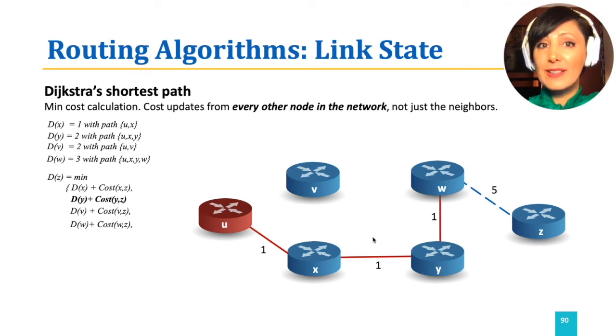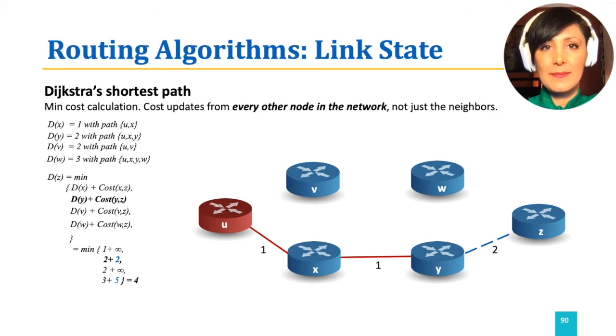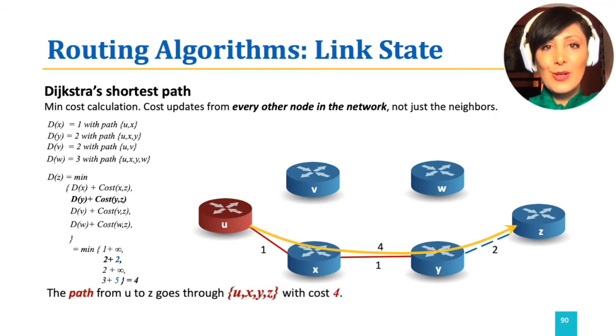The fifth iteration will be examining node Z. The least cost path to Z by far is the minimum among those calculated in previous steps. There is no node that could be reached with a lower cost from Z either. So, no new updates. Having examined all nodes of the network X, Y, V, W, and Z, the node U will have the least cost path to node Z, as well as all other nodes in the network by the end of iteration 5.